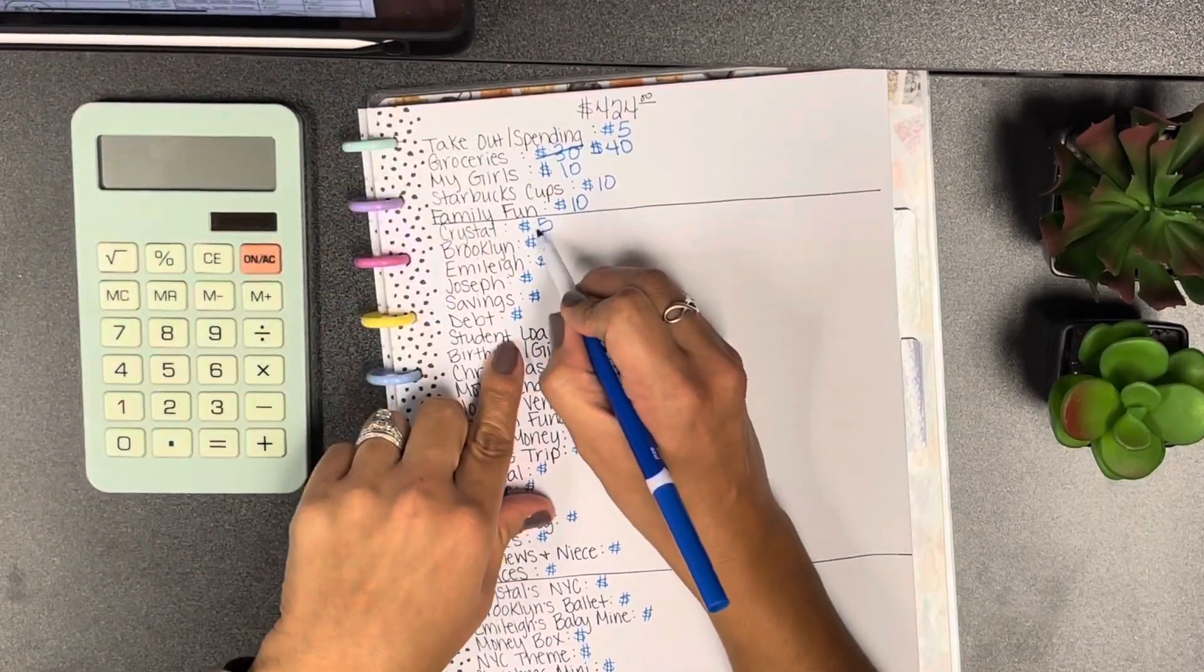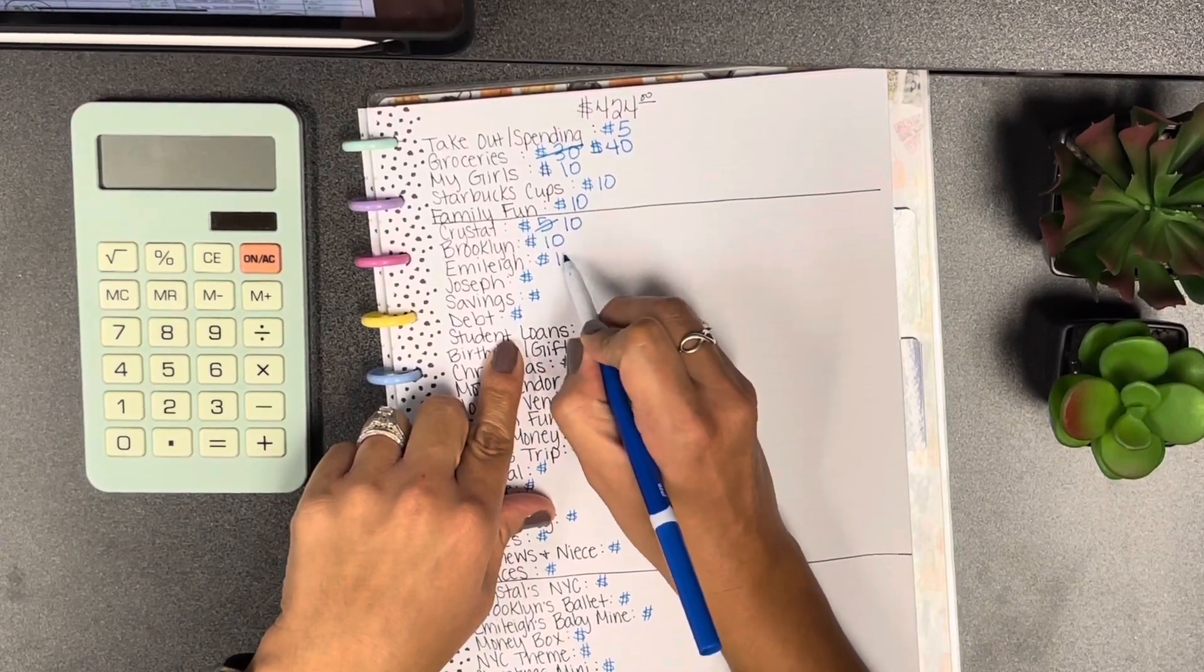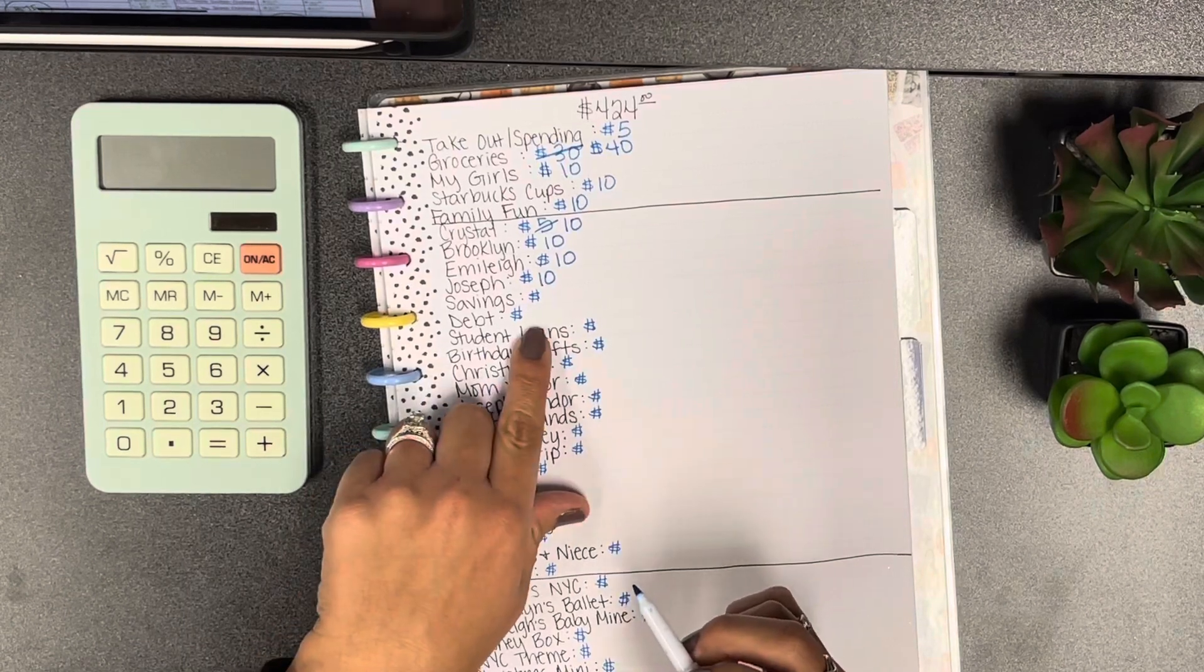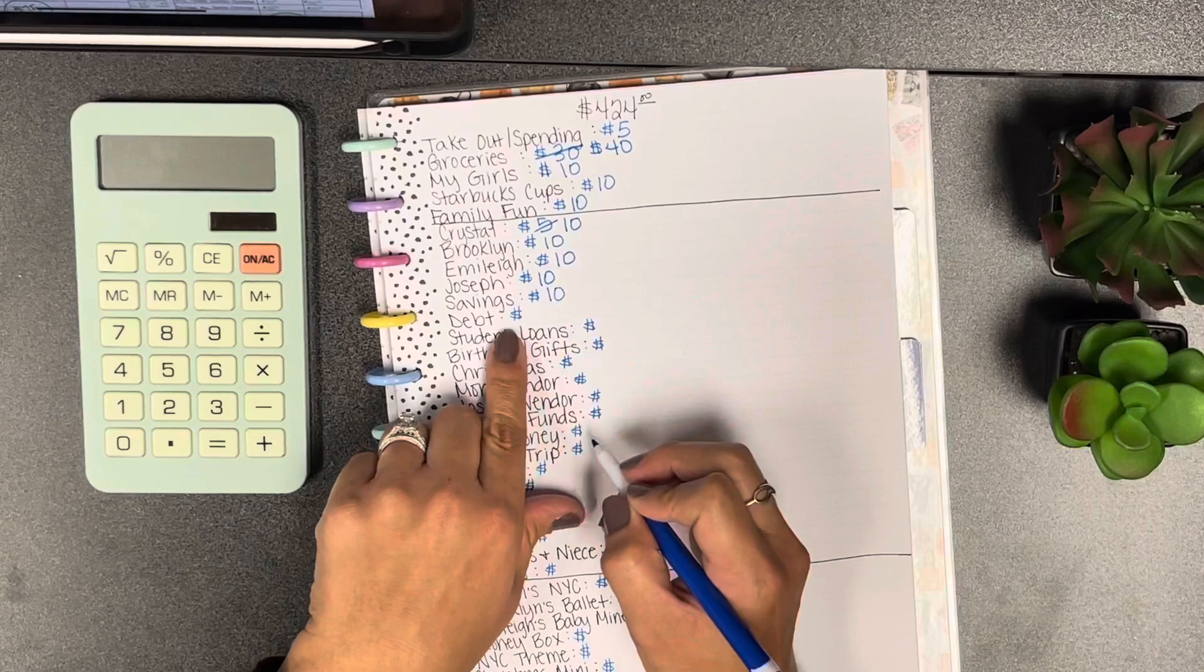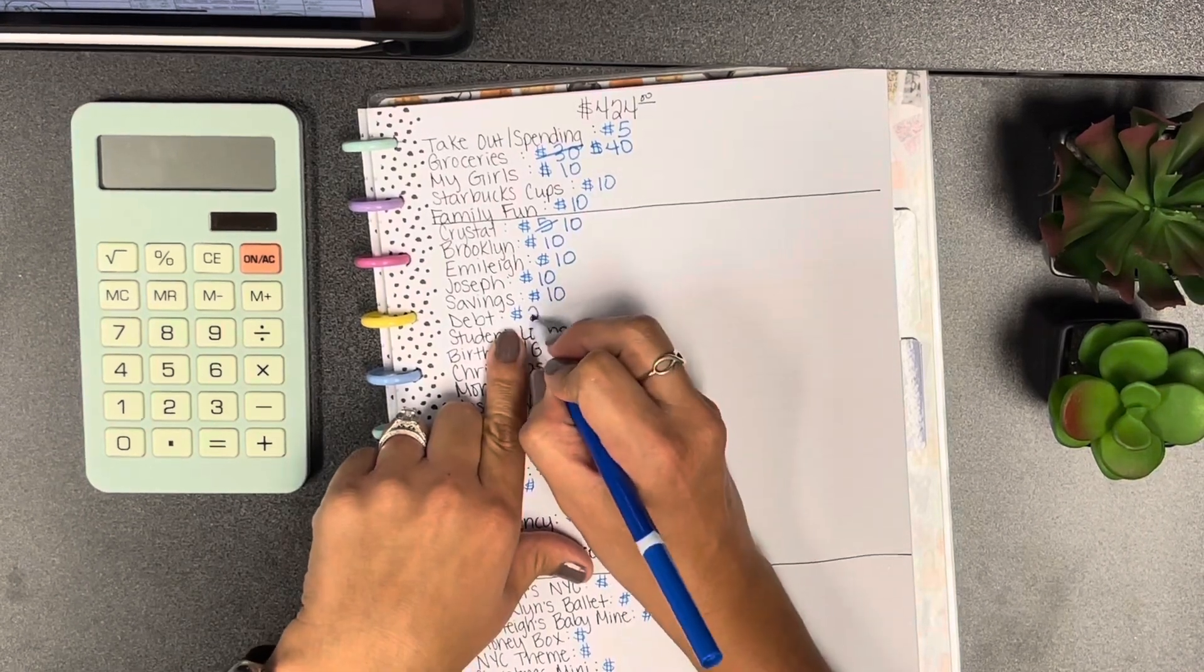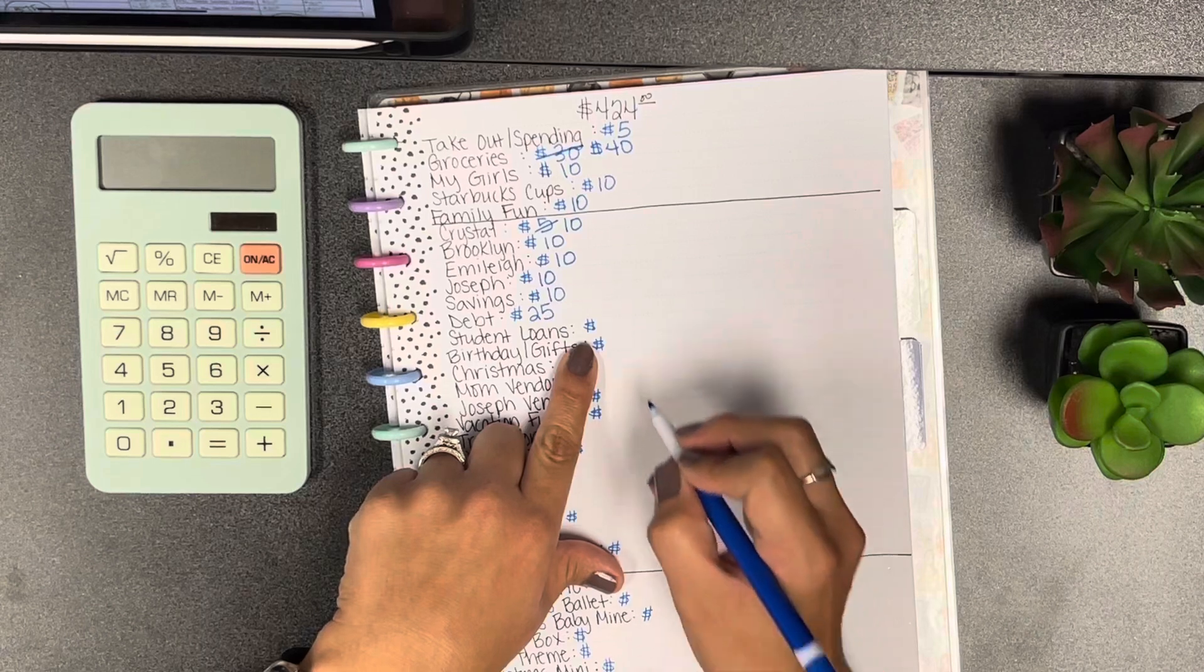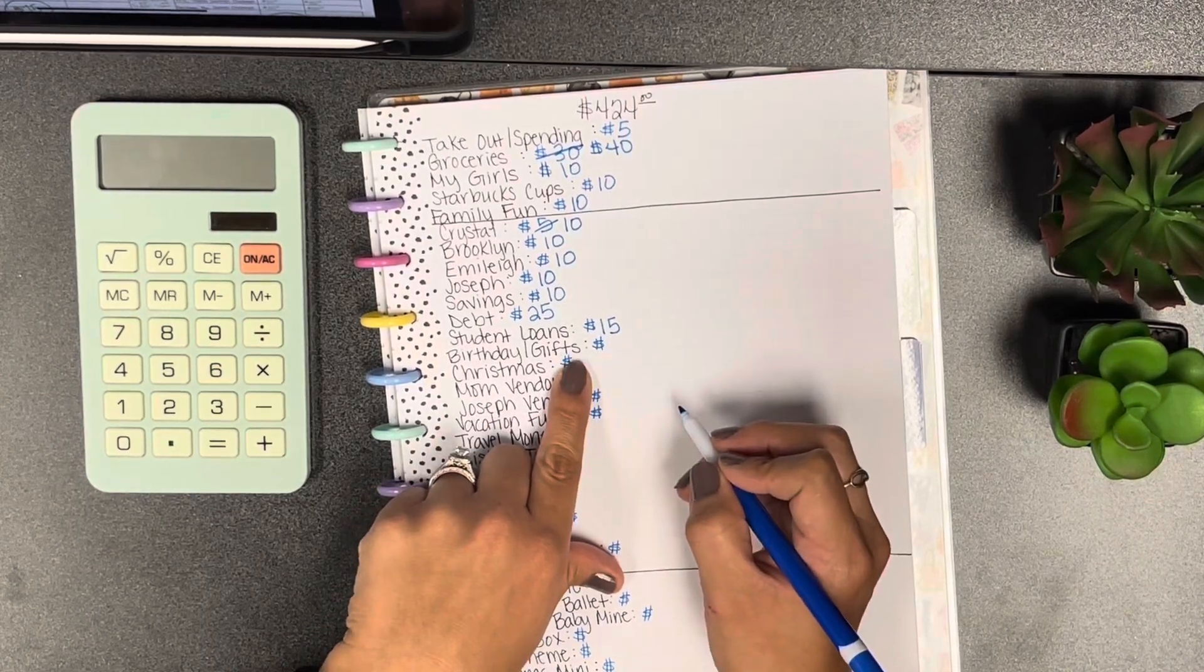Then for Crystal we're gonna do 10, Brooklyn 10, Emily 10, and my husband Joseph 10. Then for savings we're also gonna do 10 as well. For debt we're gonna do 25, student loans we're gonna add 15.